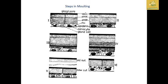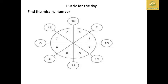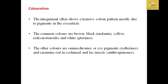The new cuticle then emerges. After ecdysis, there is coloration: the integument often shows extensive color due to pigmentation in the exocuticle. Brown and black colors are due to melanin; yellow and red are due to carotenoids; white is due to pterins. Other colors come from ommochrome eye pigments, retromine, carmine red in cochineal and lac insects, and anthocyanins — all enzymes and pigments present during body wall formation in the moulting process.